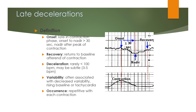Late deceleration is defined by onset late in the contraction phase, onset to nadir of more than 30 seconds, nadir after the peak of contraction, and recovery returning to baseline after the end of contraction. It rarely drops below 100 beats per minute and may be subtle at 3 to 5 beats per minute. It is often associated with decreased variability, rising baseline or tachycardia, and occurs repetitively with each contraction.